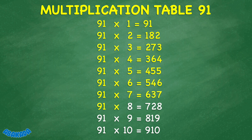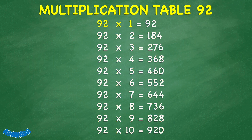91 times 8 equals 728. 91 times 9 equals 819. 91 times 10 equals 910. 92 times 1 equals 92. 92 times 2 equals 184. 92 times 3 equals 276. 92 times 4 equals 368. 92 times 5 equals 460.